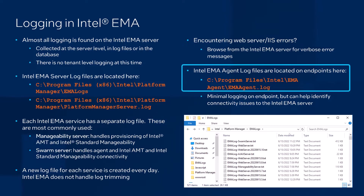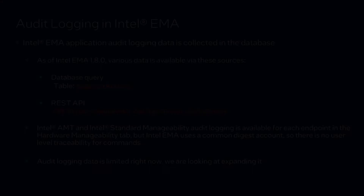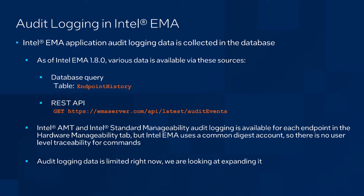Moving from the server to the endpoints, there is some limited logging done by the Intel Emma agent, but it's important to keep in mind that many issues on the endpoint, in particular those associated with Intel AMT or ISM provisioning, will get logged on the server. Another common question we get is around audit logging — being able to know who's doing what inside of Intel Emma. A variety of audit logging data is available inside the database and via Emma's REST API, though they're not exposed through any kind of reports or user interface at this time.